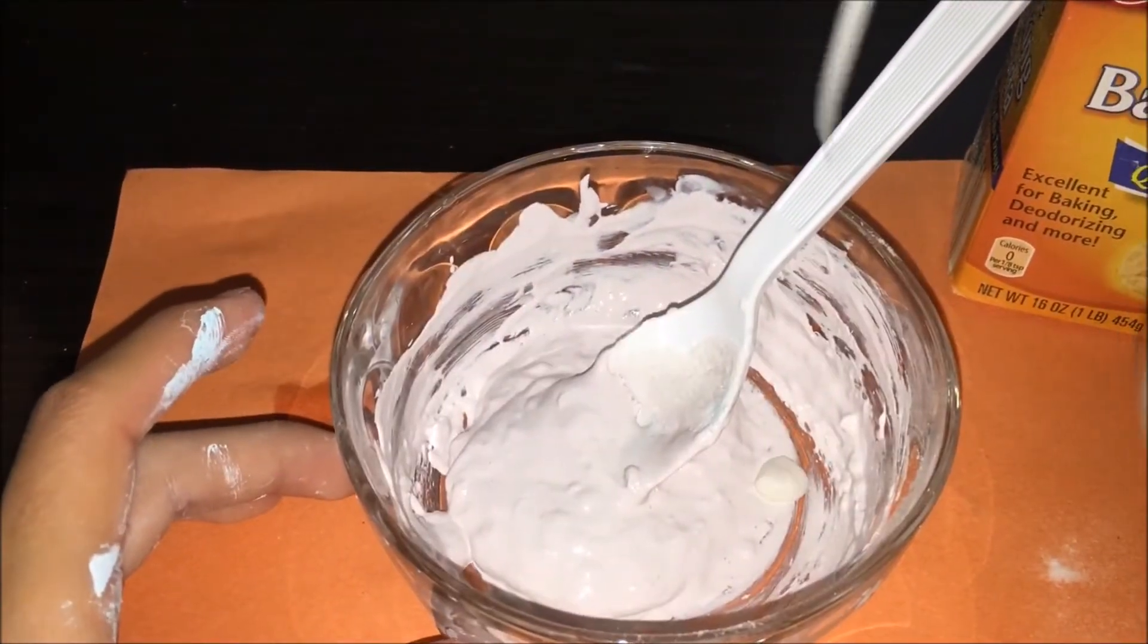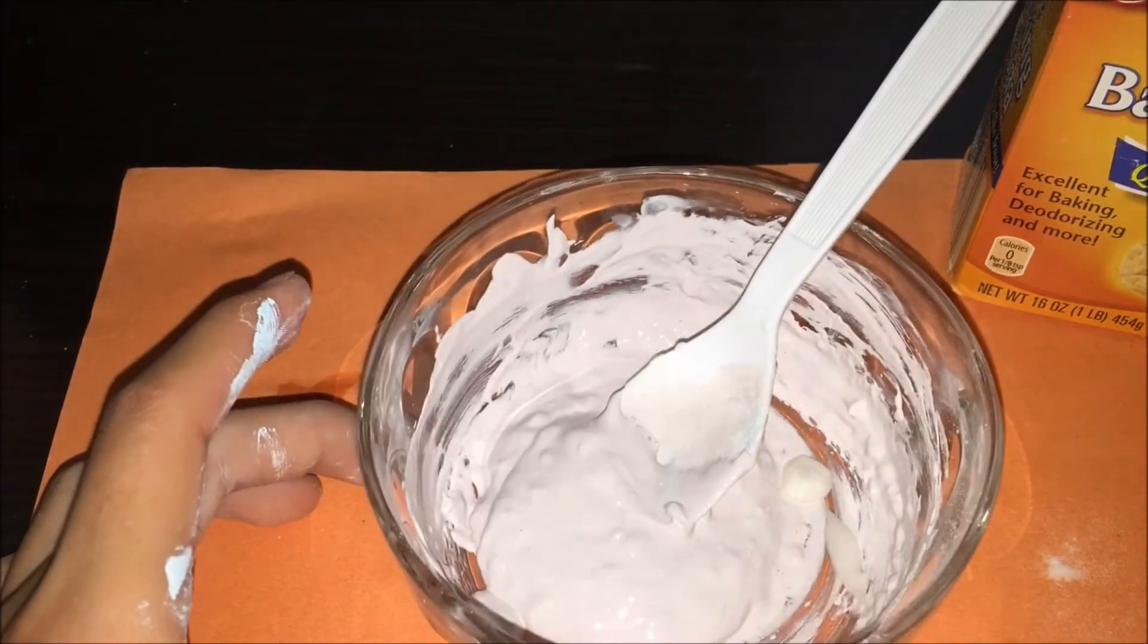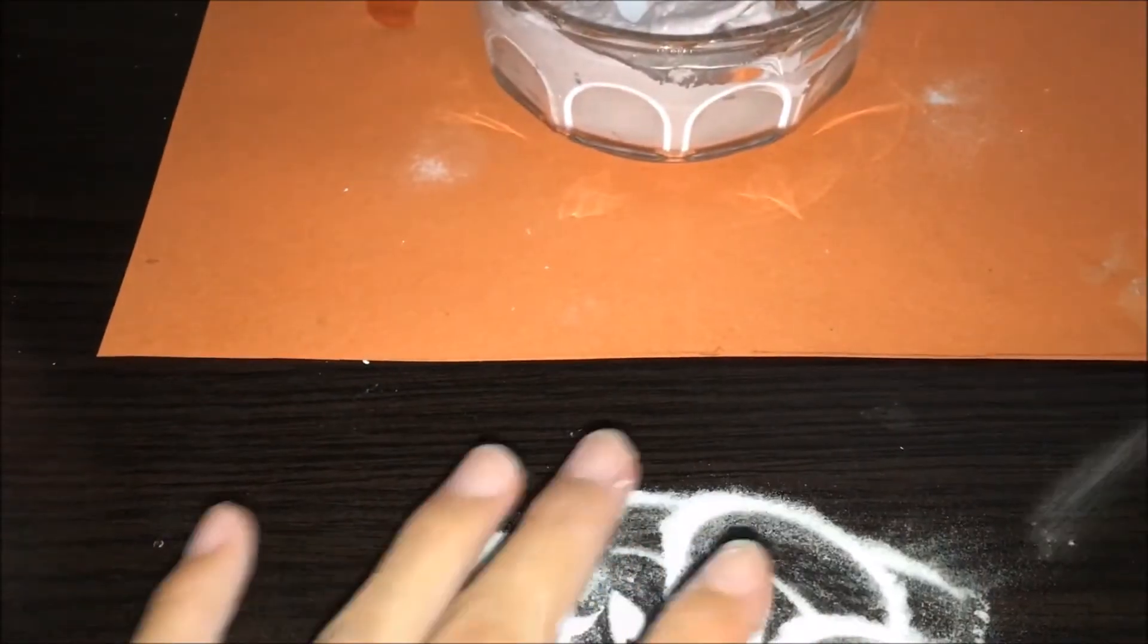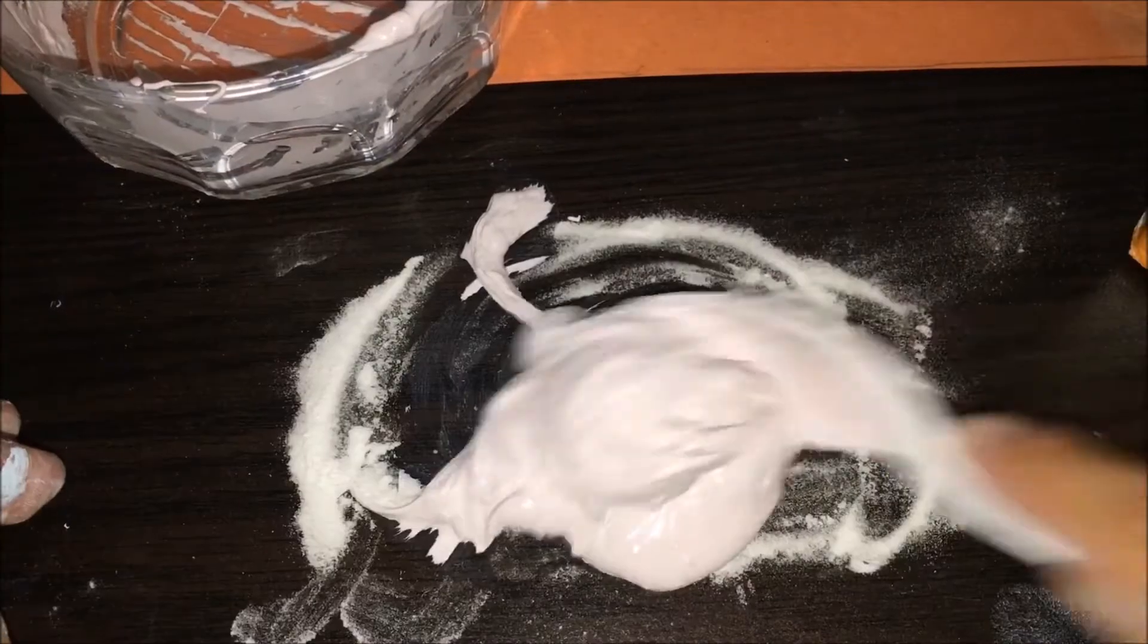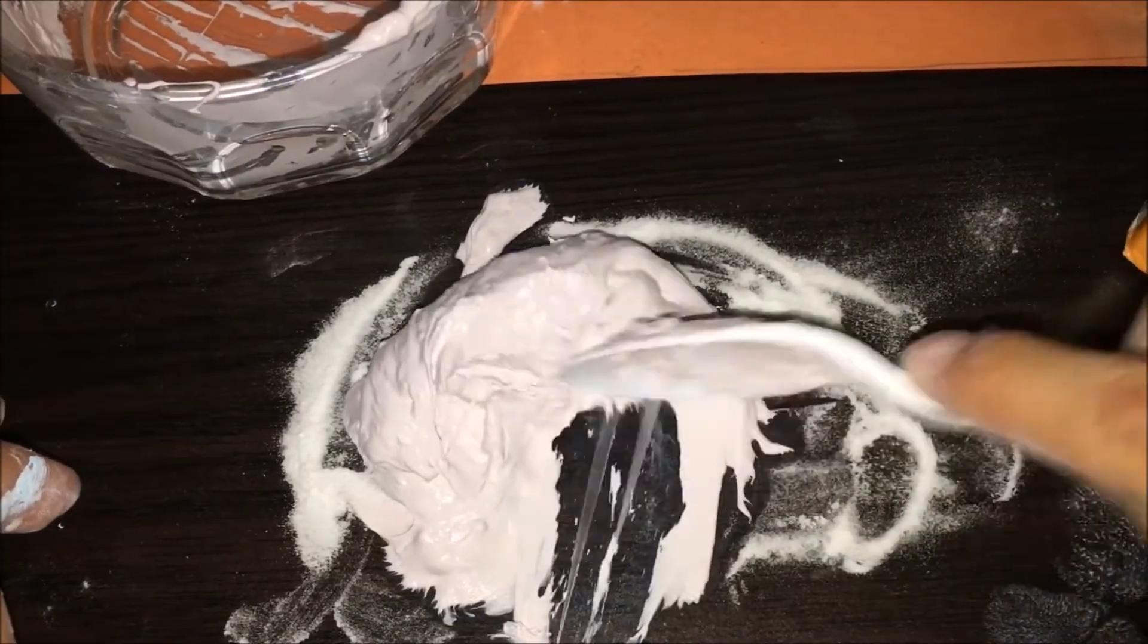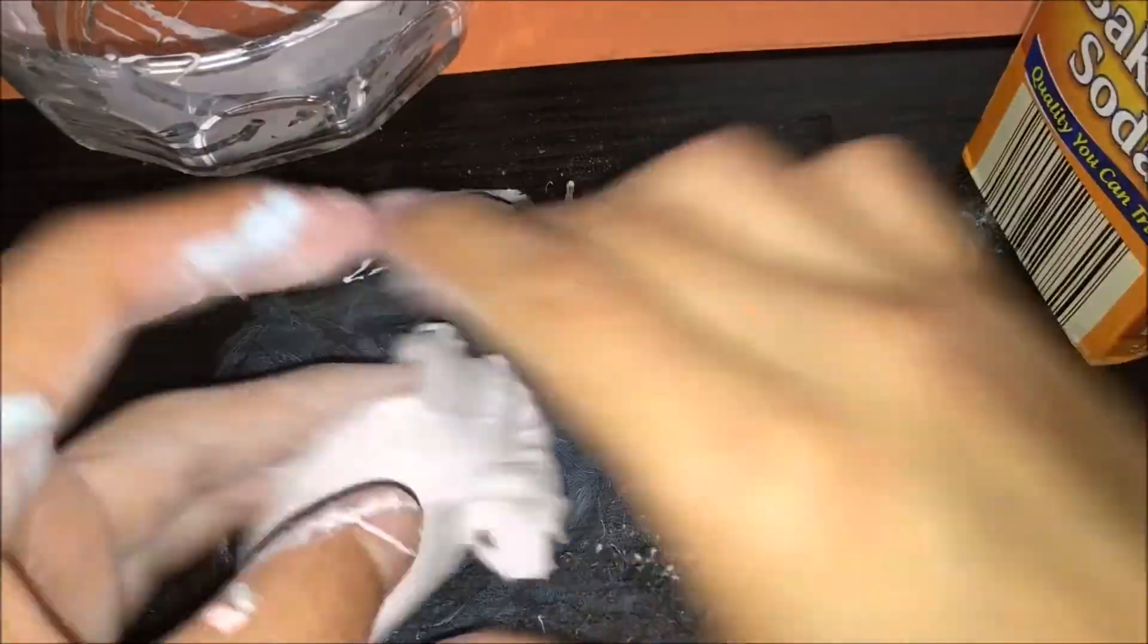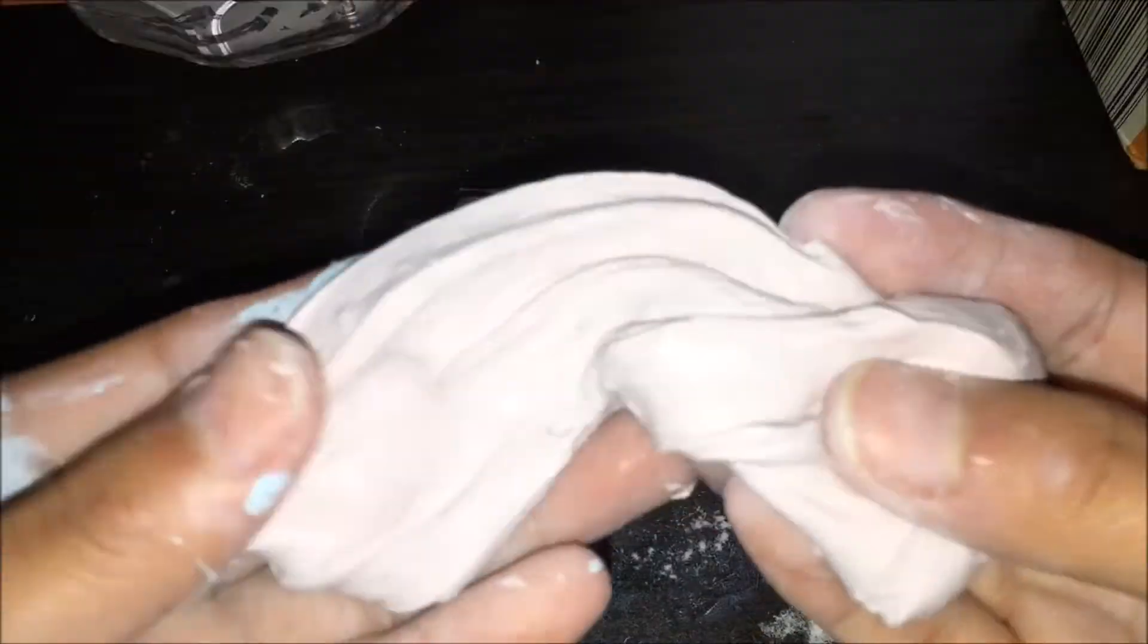From that on, I'm adding my lotion. It could be any lotion that you have. Just mix all that up so you're seeing a consistency that's getting powdery. Then add a little bit of baking soda to the table and take the slime out of the bowl. Just mix all that up so it won't be really sticky and sticking on your hands. Add a little bit of baking soda and just start playing with it.